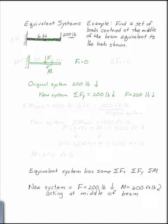Now in my original system, if I took the sum of the moments at the wall, I would have 200 pounds acting at 6 feet, which is 1,200 foot-pounds.